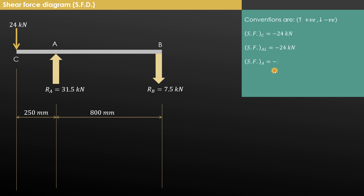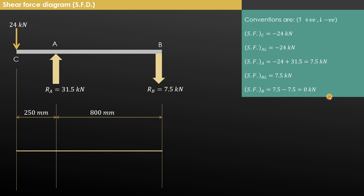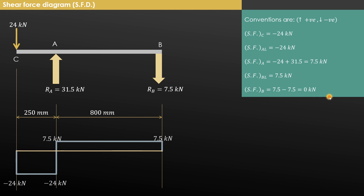Exactly at point A, the shear force is minus 24 plus 31.5, which equals 7.5 kN. There is no force acting between A and just left of B, so the shear force remains 7.5 kN. Exactly at point B, the reaction Rb acts downward (minus 7.5), so 7.5 minus 7.5 equals 0 kN. The shear force diagram shows: minus 24 at C and just left of A, 7.5 from A to just left of B, and 0 at B.